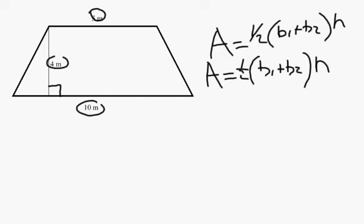Then you write out the real problem with the numbers. When you put it in numbers, it will look like this: Area equals one-half parentheses 10 plus 5 parentheses 4.